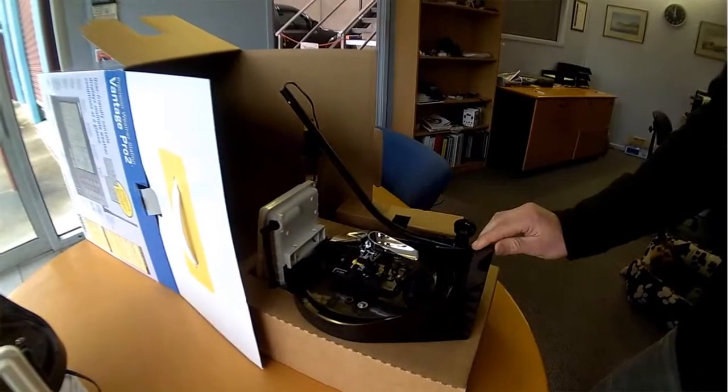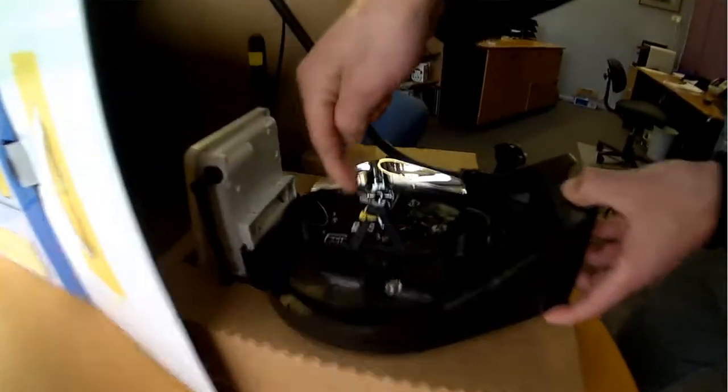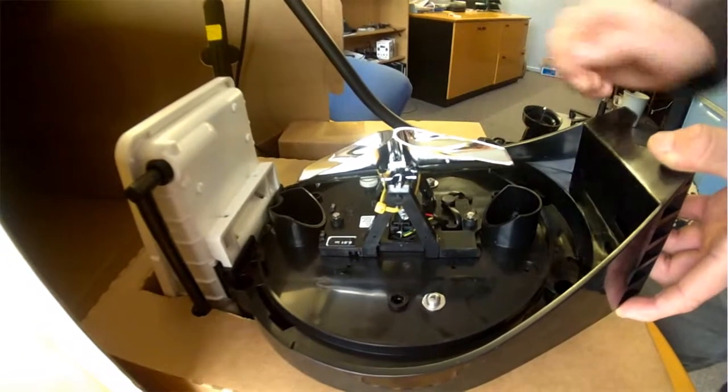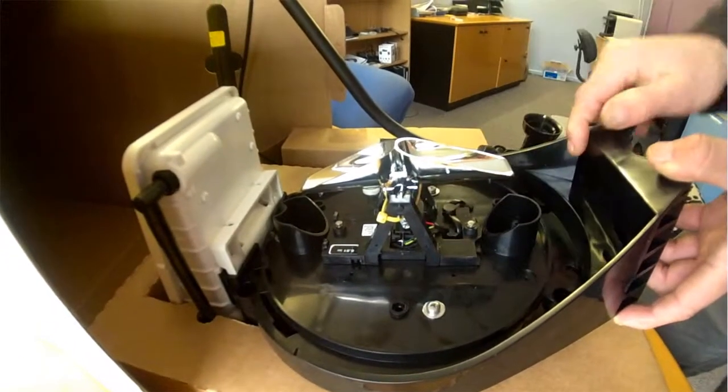When you first open your station, the rain assembly is secured with a cable tie, so you just need to cut this to reveal the magnet.